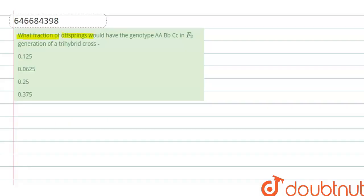Hello students, our question is: what fraction of offspring would have the genotype in an F2 generation of a trihybrid cross? Trihybrid cross means we are considering three gametes, three types of genes or three traits. We have to perform crosses accordingly.